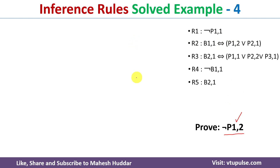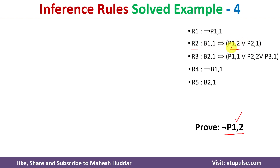I will check R1 first. If I select R1, we have negation of P11, but here we need to prove negation of P12, so R1 is not suitable. So I will start with R2. If I select R2, we can see B11 biconditional P12 or P21 is present — so P12 is present here, making R2 the better option to start with.